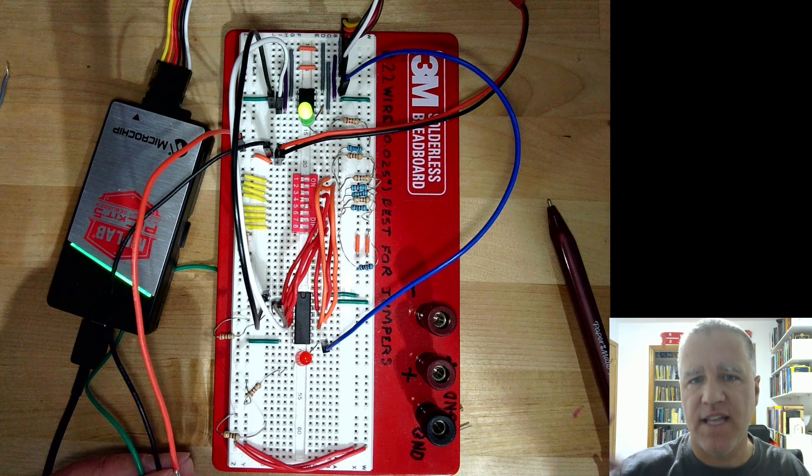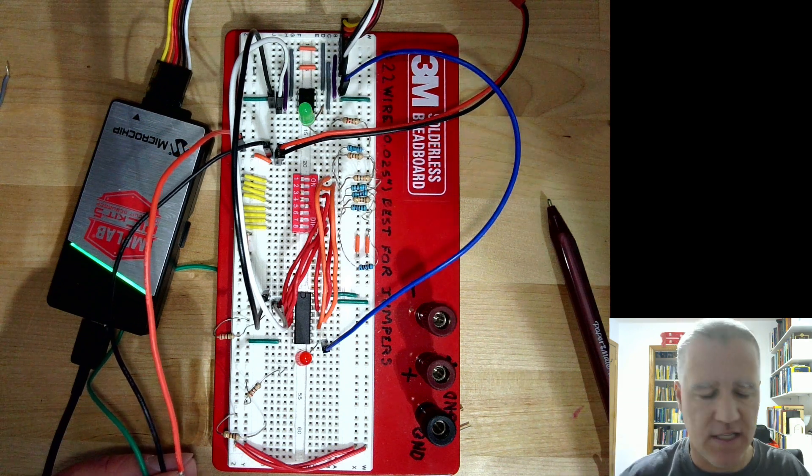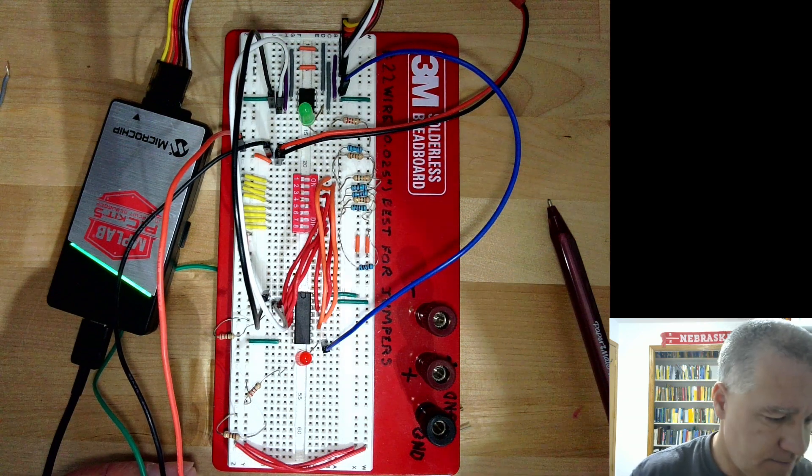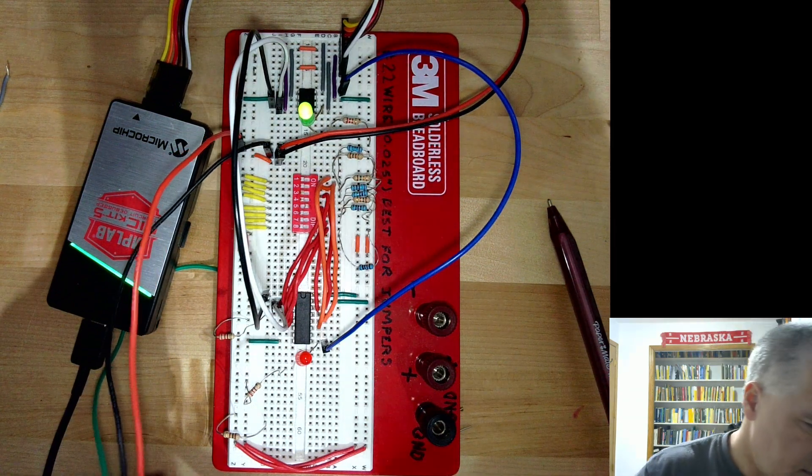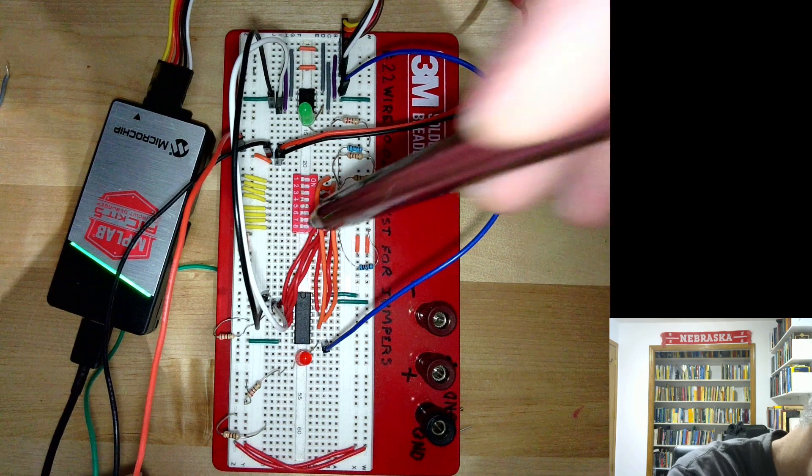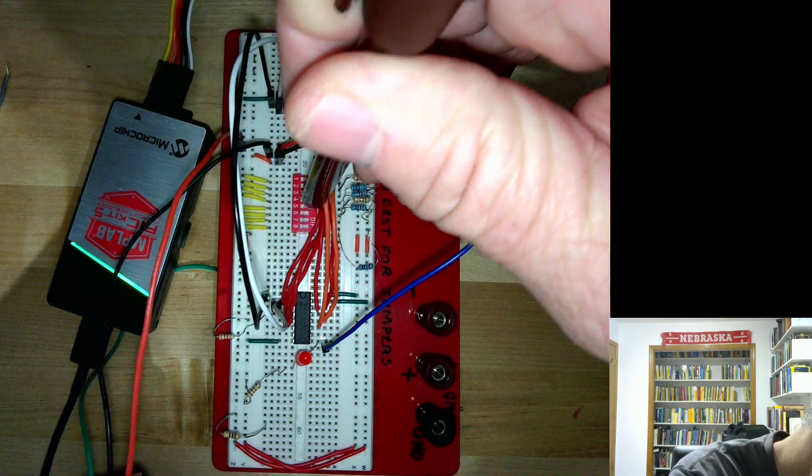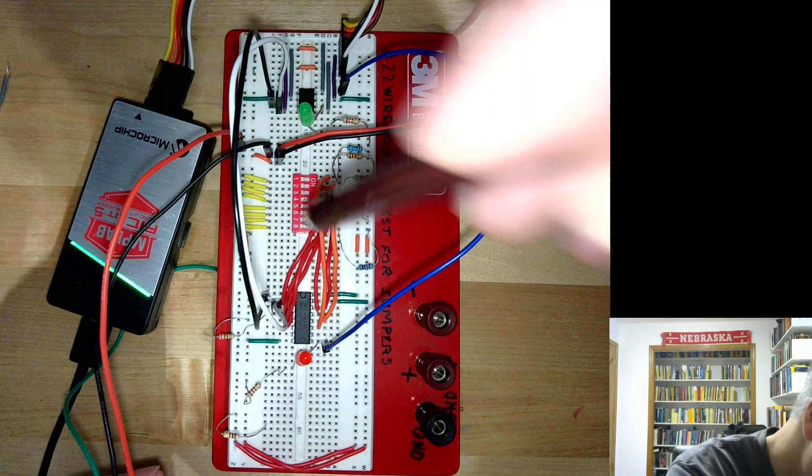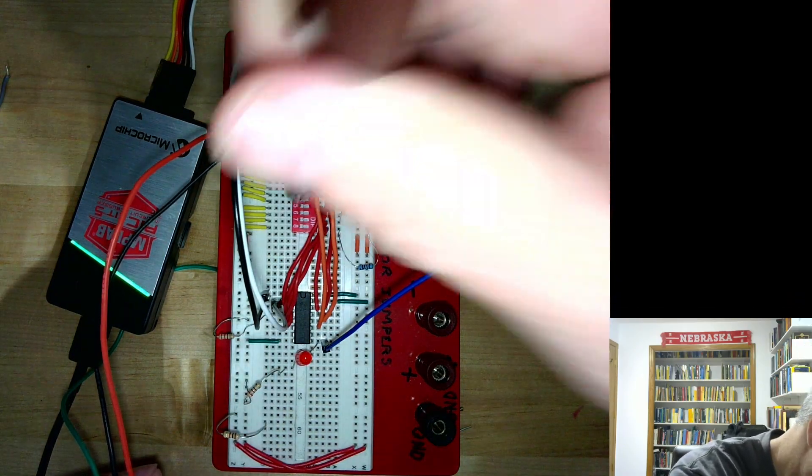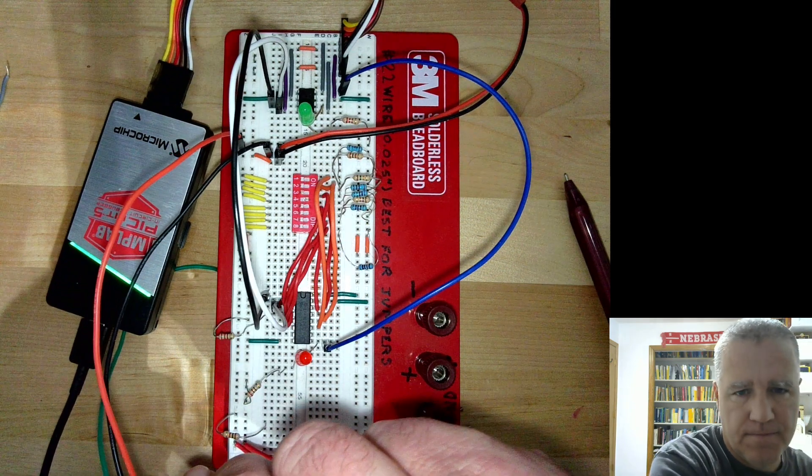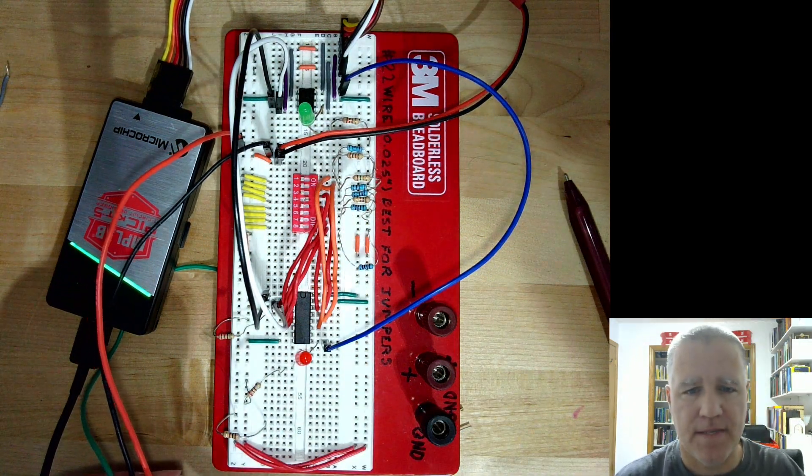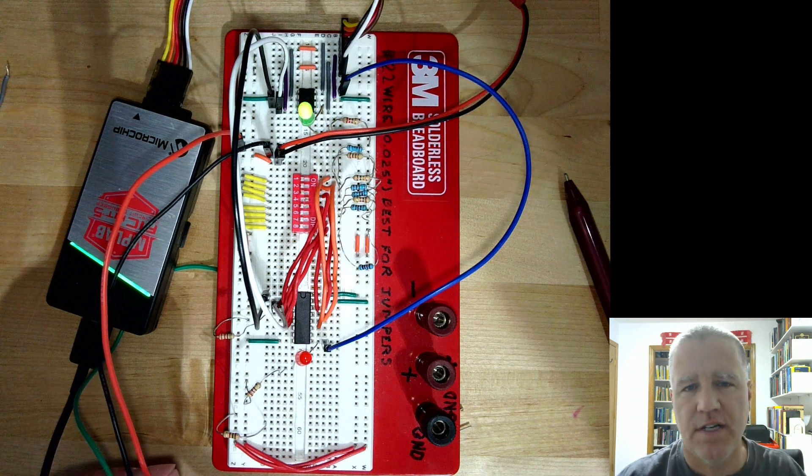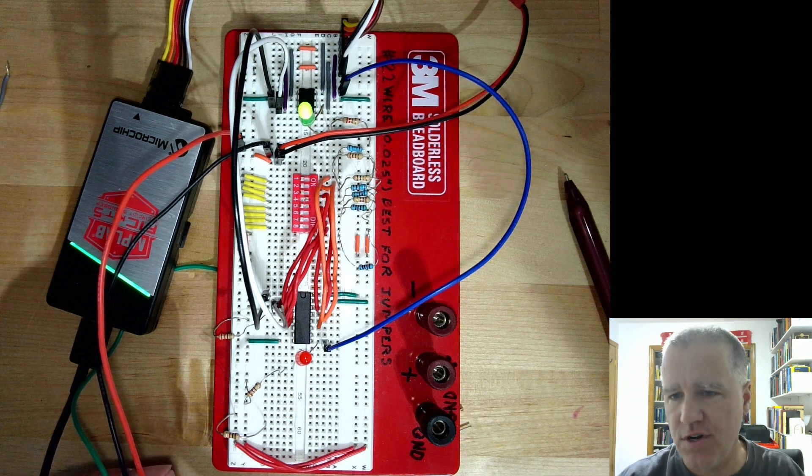So let's change this now. Let me go up. Let's go to 64. So this should be maybe about half a hertz. We'll see just the light came on just once. And now we see a much slower blink.